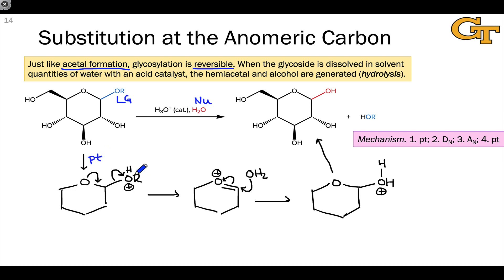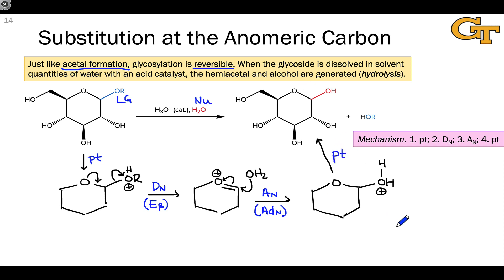There's a proton transfer to establish a good leaving group, then dissociation of the leaving group, followed by association of a nucleophile. As in acetal formation, we can think of this as a beta elimination enabled by the oxygen atom, followed by nucleophilic addition to a polarized pi bond, and a final proton transfer to generate the neutral product and regenerate the catalyst. This is an example of hydrolysis — a bond, the C–O bond at the anomeric carbon, is broken through the nucleophilic addition of water. Water (hydro) is causing the cleavage, or lysis, of the bond.